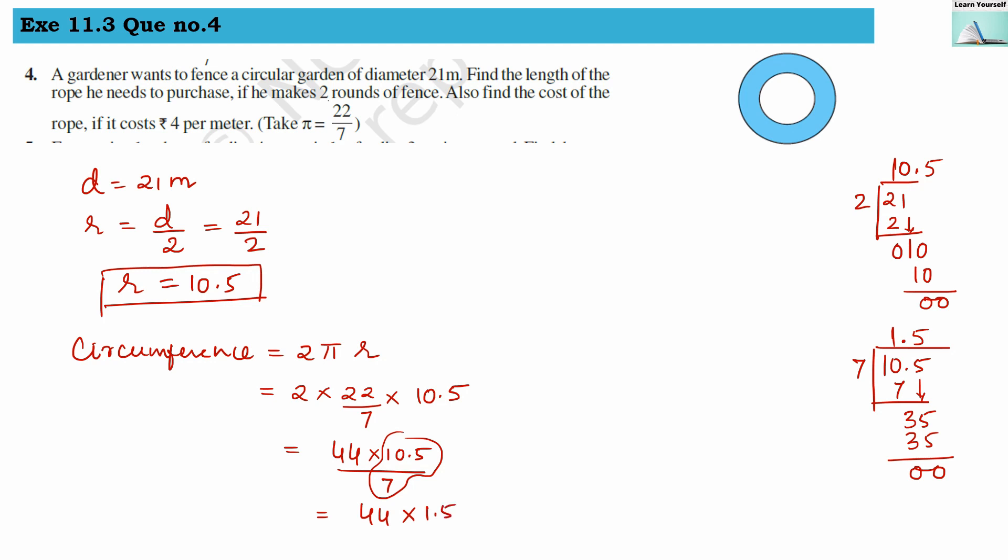Let us multiply these two again. 44 in multiplication with 15. I'm avoiding the decimal point; later in the answer I'll keep it. 5 fours are 20, carry over 2. 4 fours are 16 plus 2 equals 22. Let us add them: 0, 6, and 6. In 1.5 one number is there after decimal point, so from one's position I'm putting decimal point over here. So our answer is 66, and circumference is 66.6 meters.